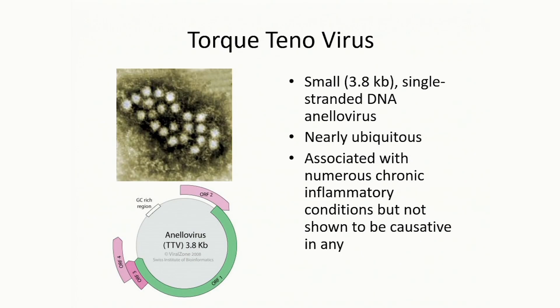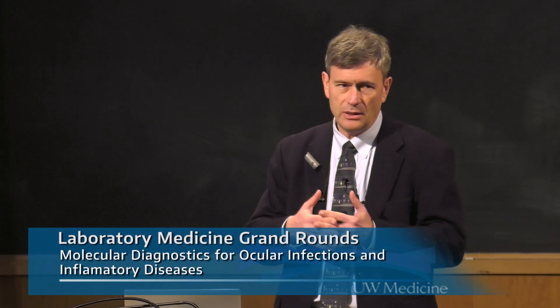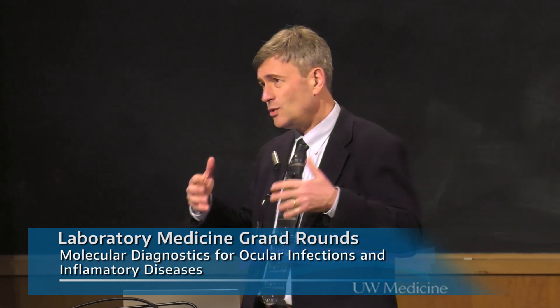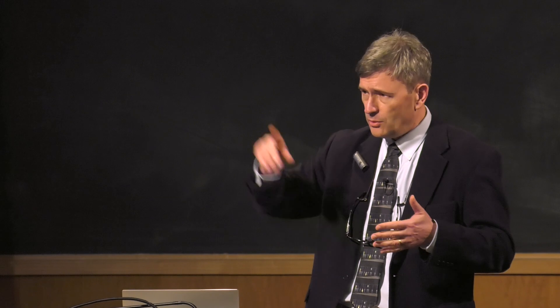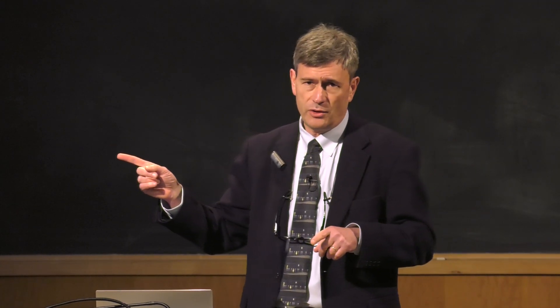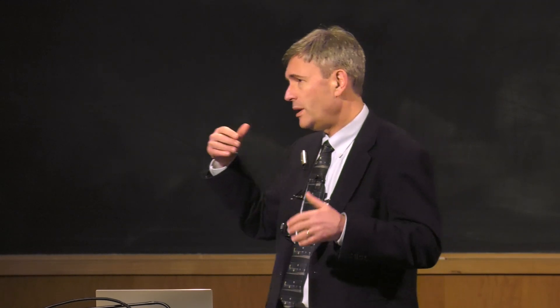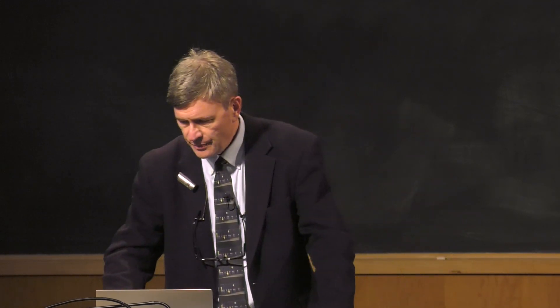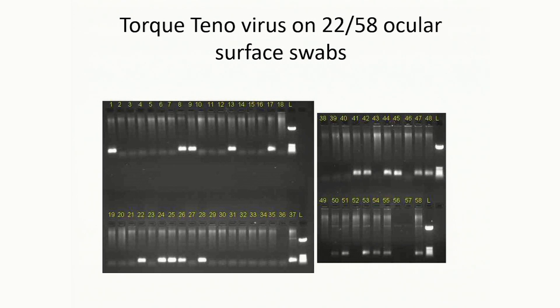For those not familiar with Torque teno virus — it's tiny at 3.8 KB, no one really knows what it does, there's no good in vitro system for replicating it, and it's nearly ubiquitous with seropositivity rates north of 90%. It's been associated with everything from chronic fatigue syndrome to chronic inflammatory diseases but has not been definitively linked to any of them. It does appear to be a normal commensal of the serum — you can track immunosuppression in patients by their TTV load in serum, because the immune system keeps it in check. We confirmed its presence in 58 swabs and found it on 22 — not uncommon on the ocular surface.